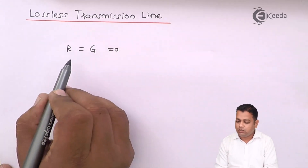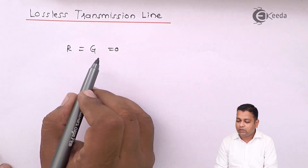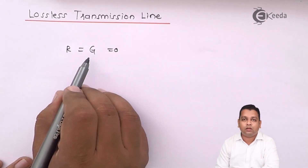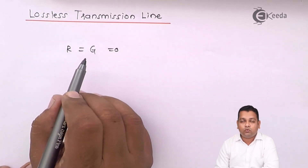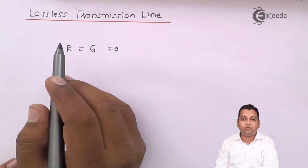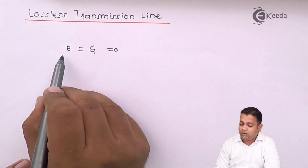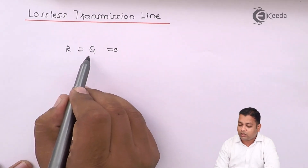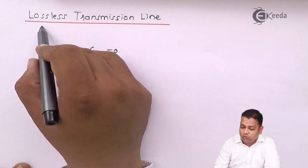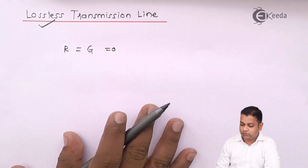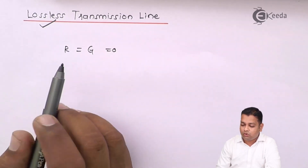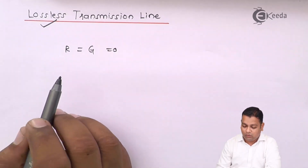R is the resistance per unit length whereas G is the conductance per unit length. R is for the conductive material and G is for the dielectric material. For example, in a two-wire transmission line, the dielectric separates the two wires. So here R for the conductor and G for the dielectric material must be equal to zero — that is when the transmission line is said to be a lossless transmission line. We will now see what changes occur in the other parameters and equations when these two are set to zero.